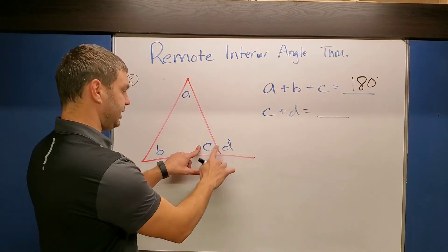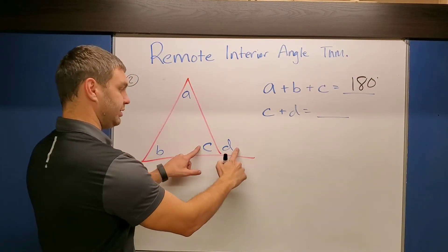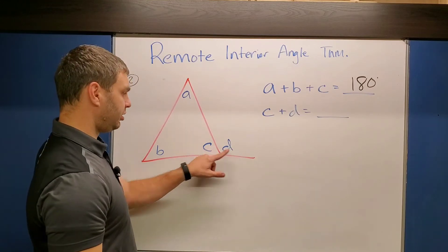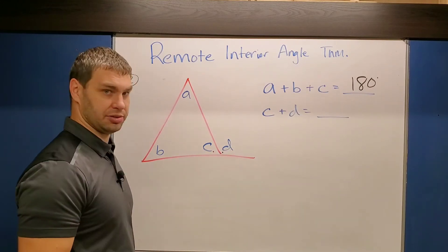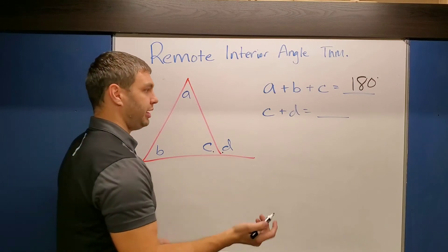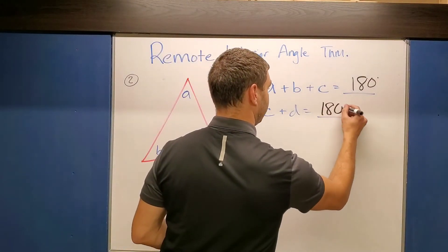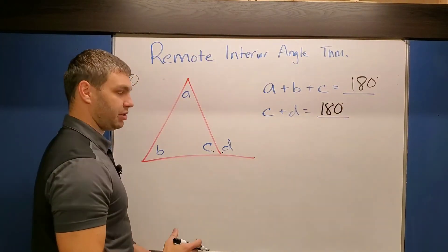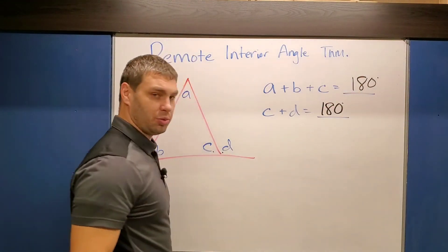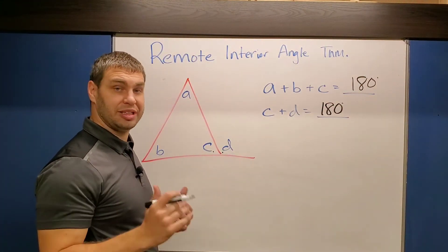Also, if I look at c plus d, when I extend one of those sides, this is that exterior angle letter d. Well, this also forms a linear pair of those two angles. And we know any linear pair also adds up to be 180 because they're along the line, right? They're along the line. So then if I have these two things both equal 180, well, then they also have to equal each other.